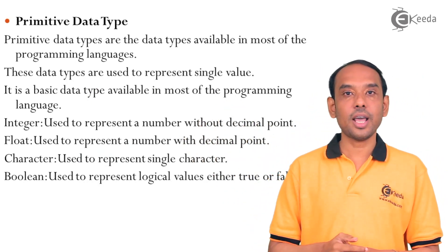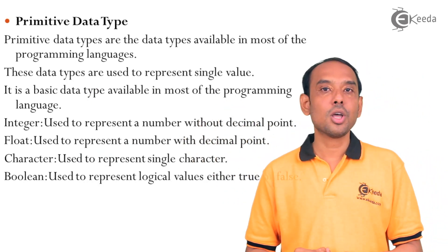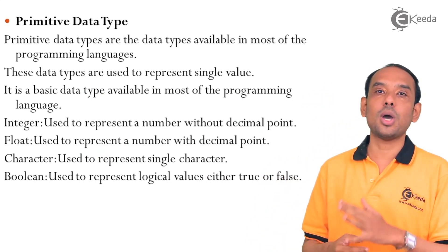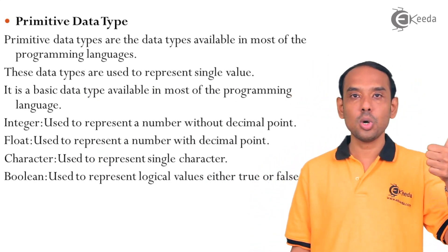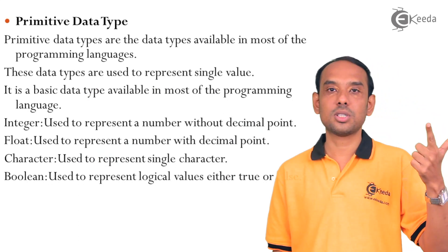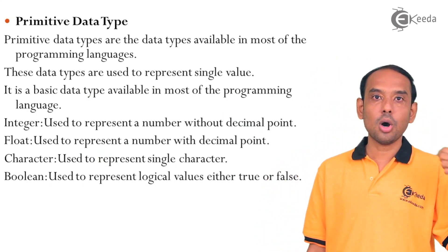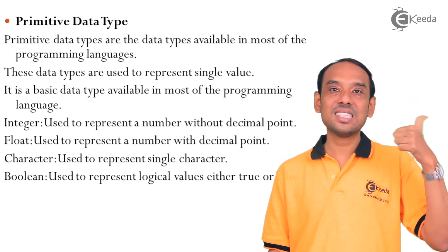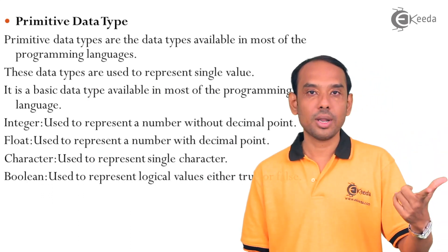The next primitive data type is Boolean. Boolean represents a logical value, and there can only be two logical values: either true or false, either 0 or 1.